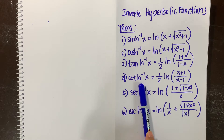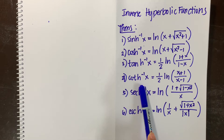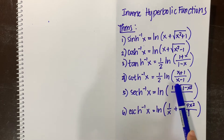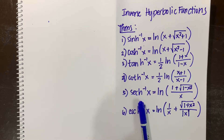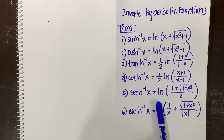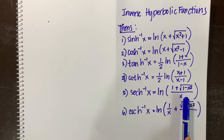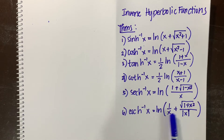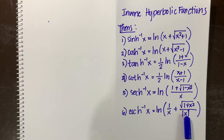We also have the inverse hyperbolic cotangent of x equal to one-half ln of x plus 1 all over x minus 1. The inverse hyperbolic secant of x is equal to ln of the quantity 1 plus the square root of 1 minus x squared all over x. And the inverse hyperbolic cosecant of x is equal to ln of the quantity 1 over x plus the square root of 1 plus x squared all over the absolute value of x.